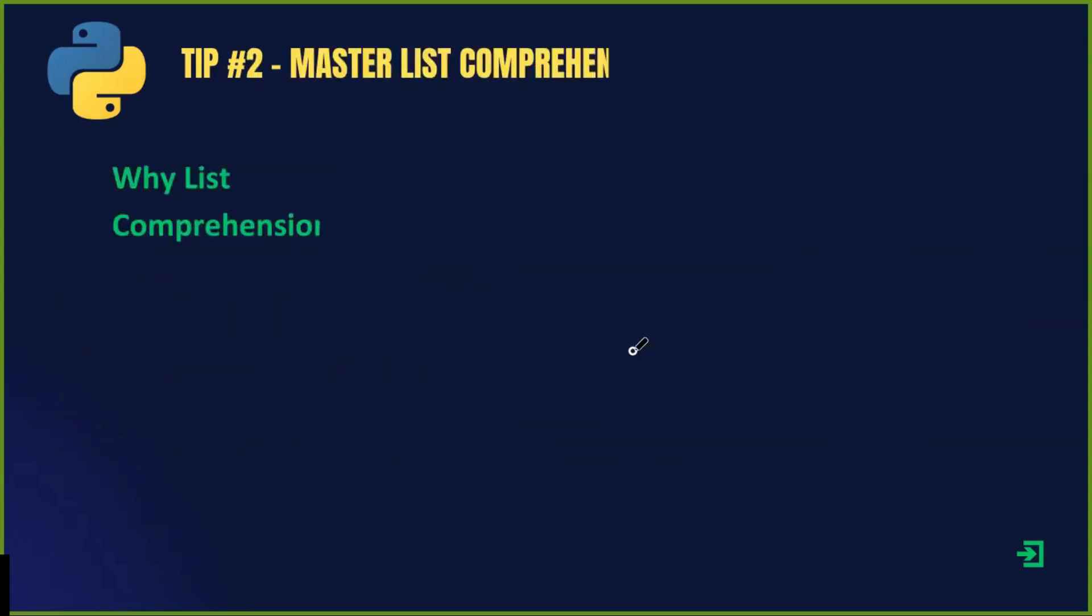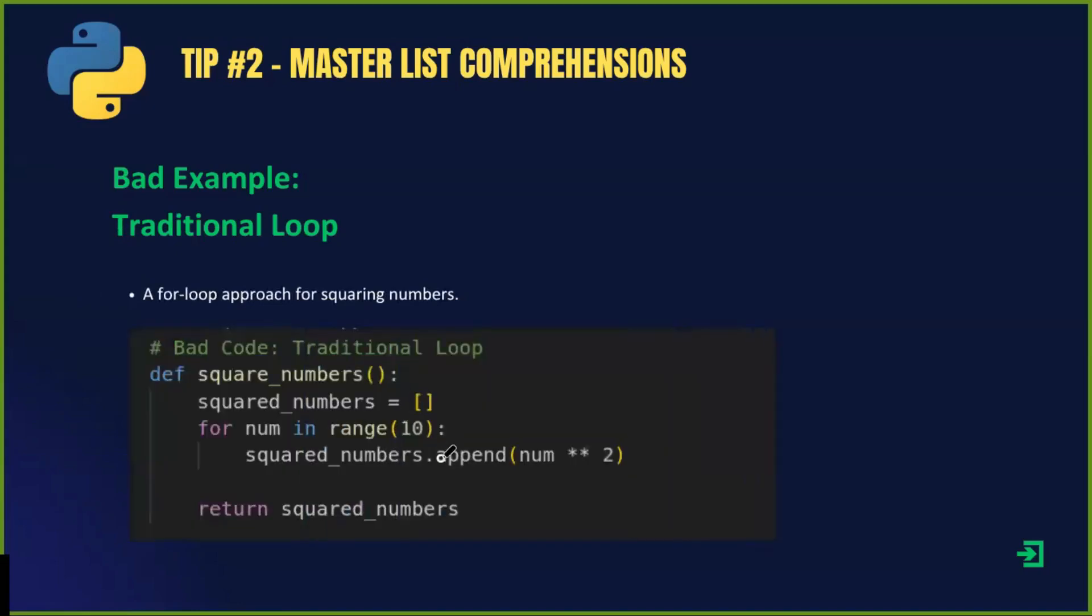Tip number two: master list comprehensions. List comprehensions are a more Pythonic way to create lists. They make your code more concise and readable. Instead of writing multiple lines of repetitive loops, you can achieve the same result in a single, elegant line of code. Let's compare two approaches. Here is the traditional way to create a list of squares. While this works fine, it's longer than necessary.